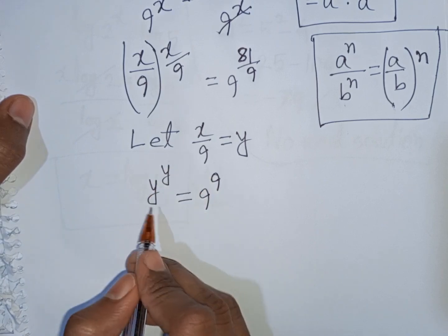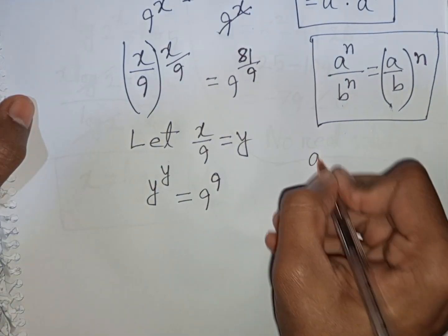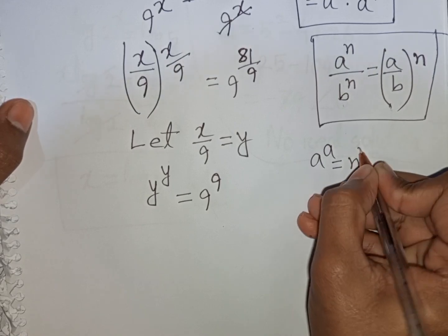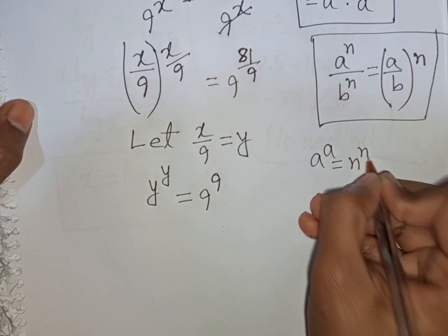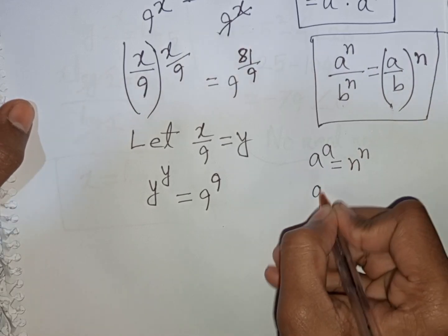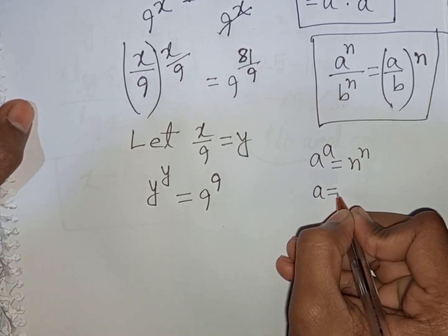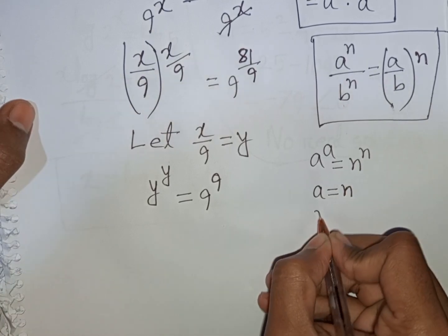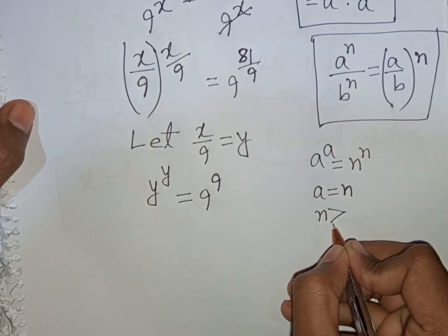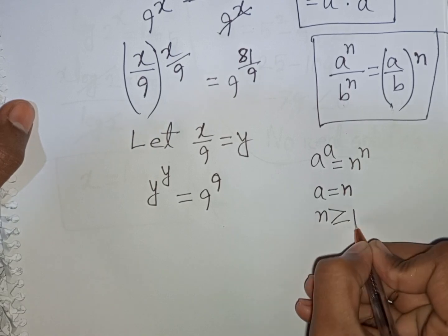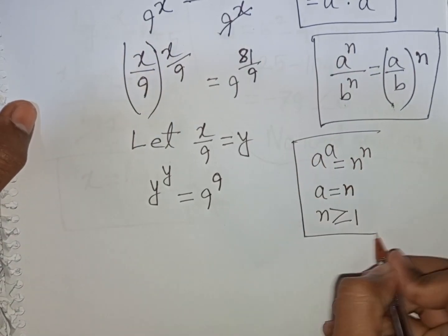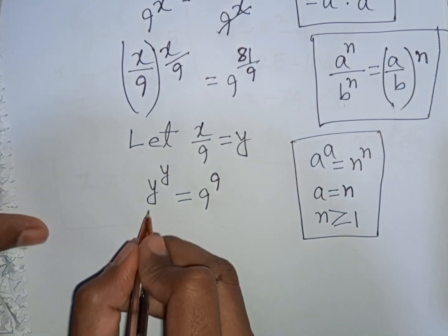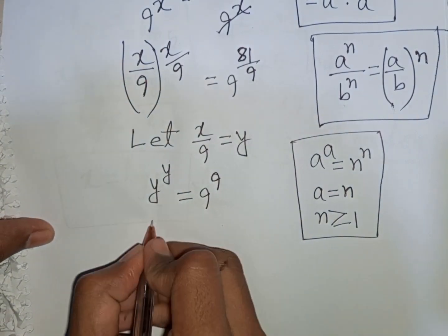Now here I can apply the rule that if a^a = n^n, then a is equal to n, where n is greater than or equal to 1. So according to this rule, I can compare and y will be equal to 9.